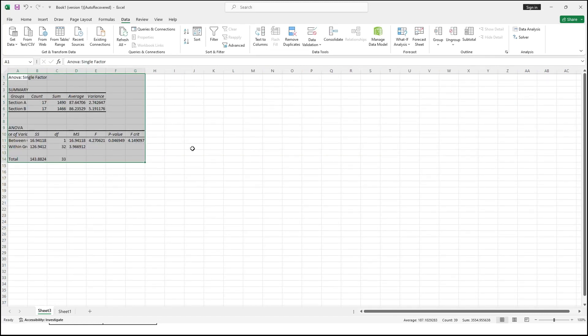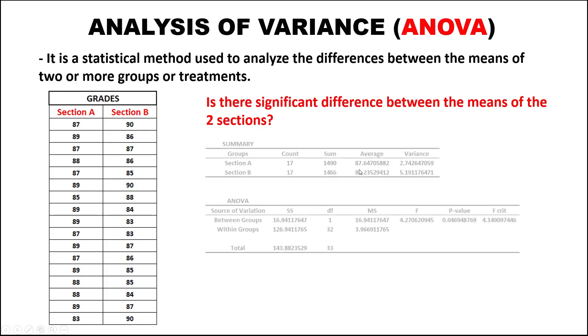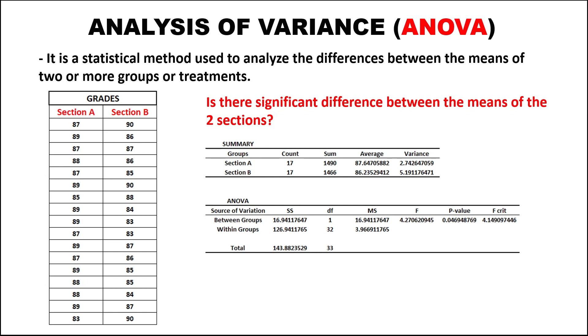This is now the result. From this result, we need to interpret the data. We have the summary for section A and section B.